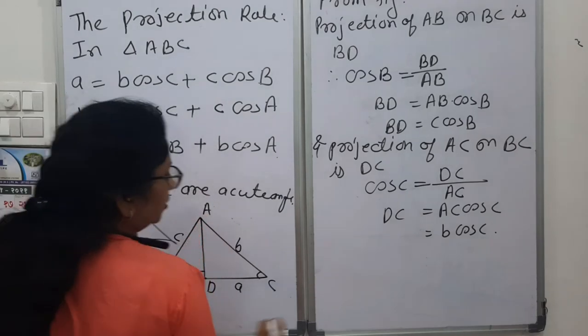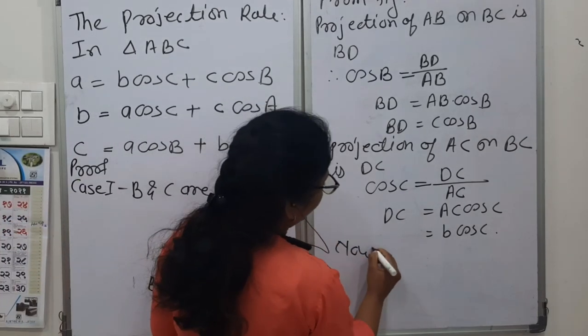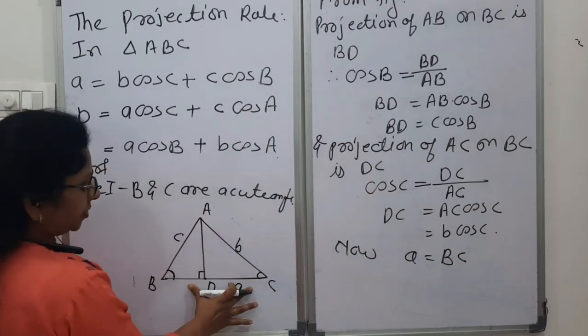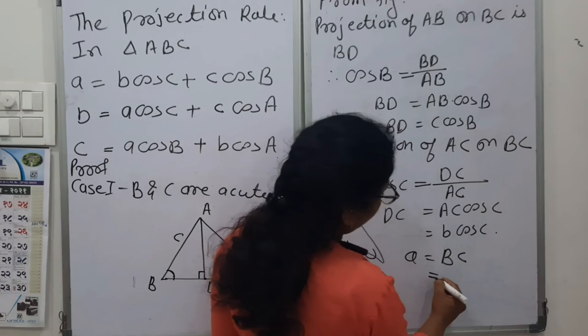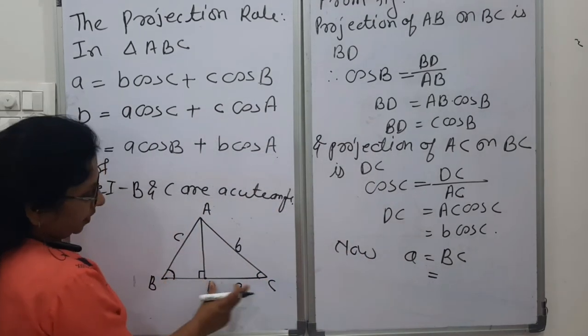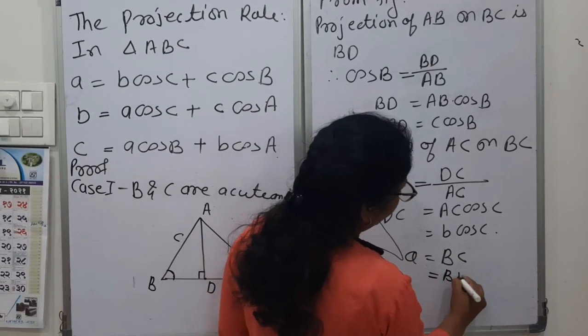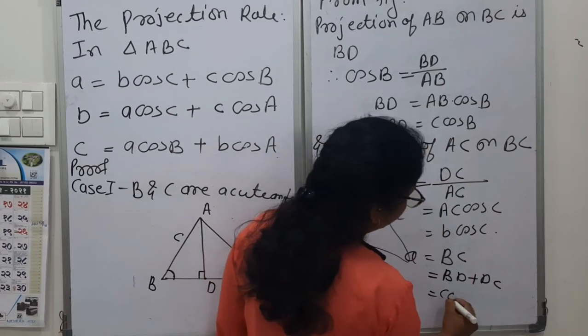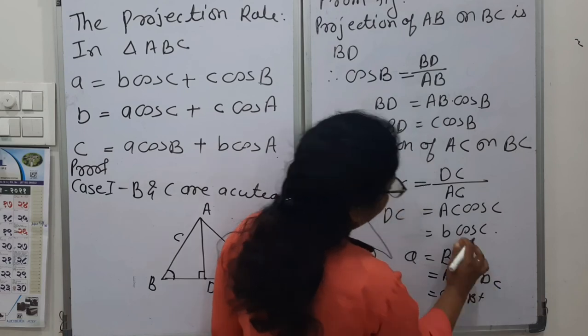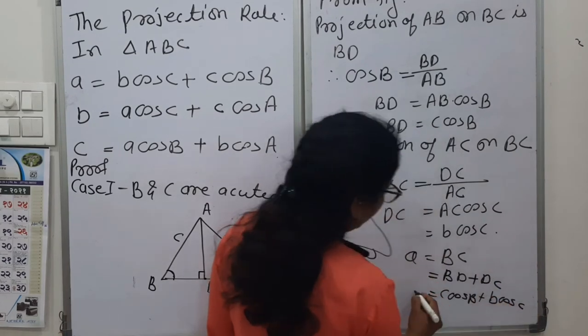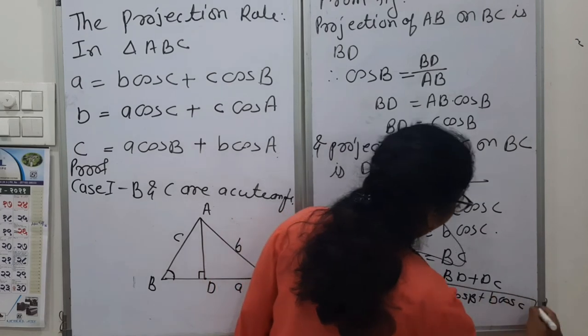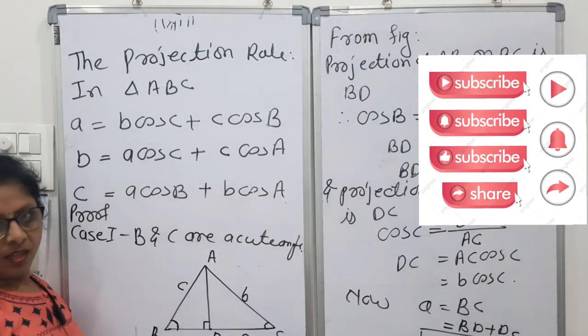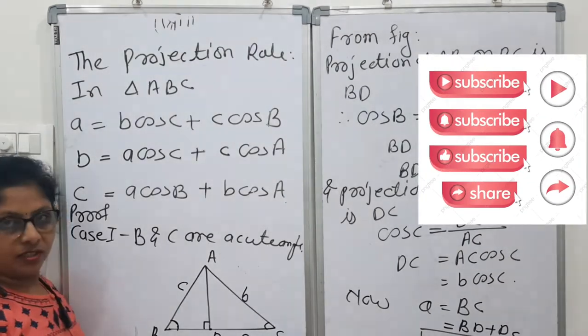Now we want a here. So a equals to BC. We have denoted this BC by a. But BC is nothing but BD plus DC. BD plus DC. BD we have found c cos B. And DC b cos C. This is our a. This means the first statement of projection rule for case 1. This is case 1. Now we will decide.